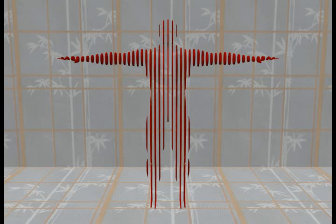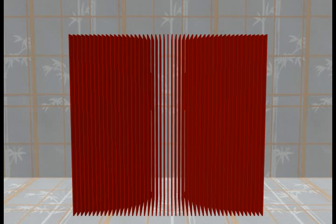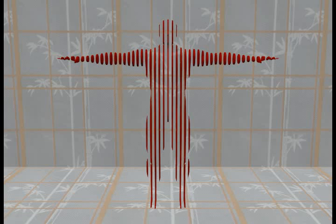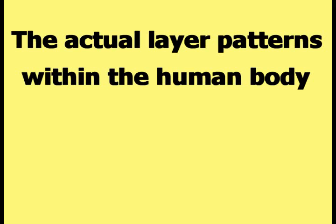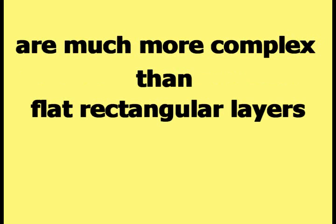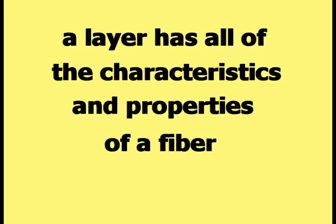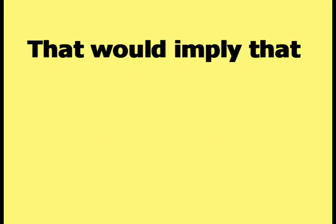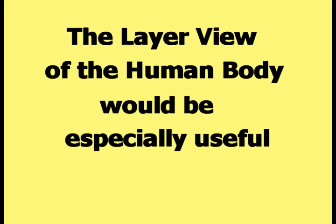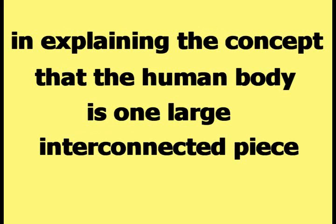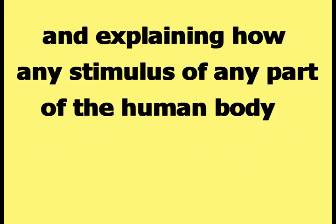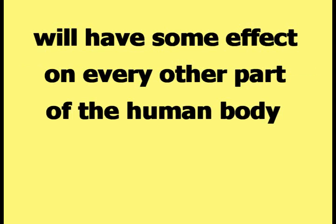This example of the layer view of the human body used a grid of flat rectangular layers to make the demonstration simple and clear. The actual layer patterns within the human body are much more complex than flat rectangular layers. Because a layer is created from fibers, a layer has all of the characteristics and properties of a fiber. That would imply that, like the fiber view of the human body, the layer view would be especially useful in explaining that the human body is one large interconnected piece, and in explaining how any stimulus of any part of the human body will have some effect on every other part.